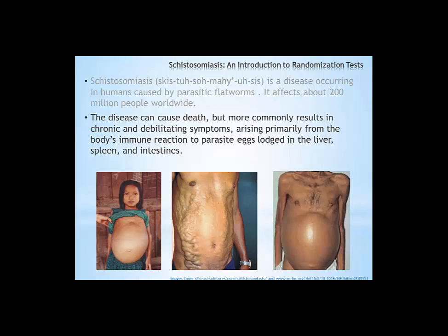Currently there's one drug, praziquantel, that is commonly used for treatment of schistosomiasis. It's inexpensive and effective. However, many organizations are concerned about relying on a single drug to treat a serious disease that affects so many people worldwide. In 2007, several researchers published work on a promising new drug called K11777, which in theory might also treat schistosomiasis.